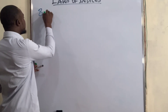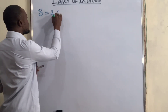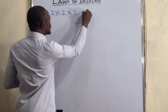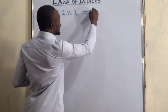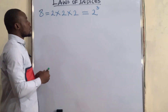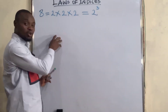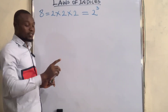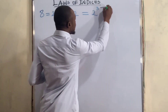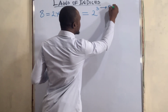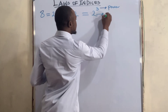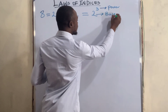8 is two multiplied by two multiplied by two, so in index form it is written as two to the power of three. This three shows the number of times two appears — the first, the second, and the third. So the three up here is called the power, and two is called the base.